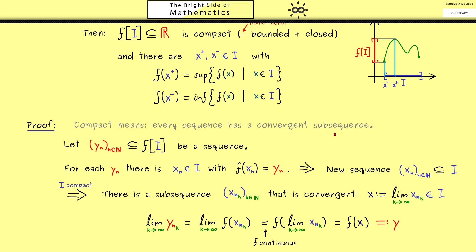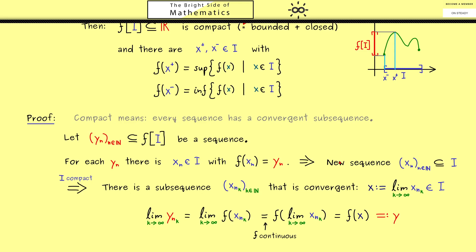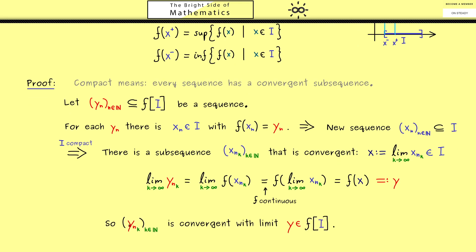And this image f of x we can simply call y. And with this you should see we have everything we need for compactness. So let's summarize that in a conclusion here. So our subsequence y_nk is convergent and its limit y lies in the image f of I. And therefore f of I is compact. And therefore we have shown what we wanted to show in this video.